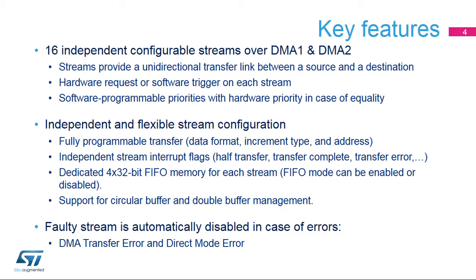The two DMA controllers, DMA1 and DMA2, have 16 streams in total, each dedicated to managing memory access requests from many peripherals. Each stream has flexible hardware requests and support for software triggers. The stream software priority is programmable, and a hardware priority is used in case of equality. Streams are independently configurable, each with its own data format, increment type, and data address for both source and destination.